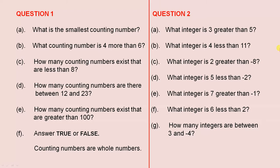Now question two. We have seven parts. What integer is three greater than five? What integer is four less than eleven? What integer is two greater than negative eight? What integer is five less than negative two? What integer is seven greater than negative one? What integer is six less than two? How many integers are between three and negative four?